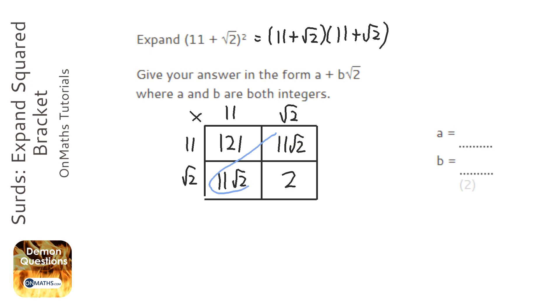Now unlike quadratics where these two will add, these two will also add. So we've just got to be careful of that. So 121 plus 2 is 123, and 11 root 2 plus 11 root 2 is 22 root 2.